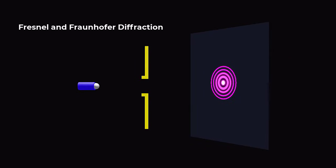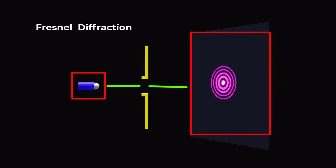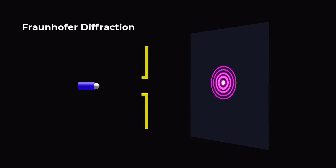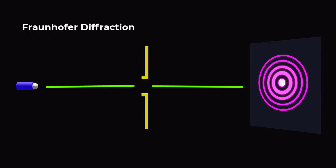There are two types of diffraction: Fresnel and Fraunhofer. In Fresnel diffraction, the light source and the screen are relatively close to the obstacle, and this proximity results in complex diffraction patterns. In contrast, Fraunhofer diffraction occurs when the source and the screen are at larger distances from the obstacle. Fraunhofer diffraction patterns are simpler and easier to calculate mathematically, making them valuable for various applications.